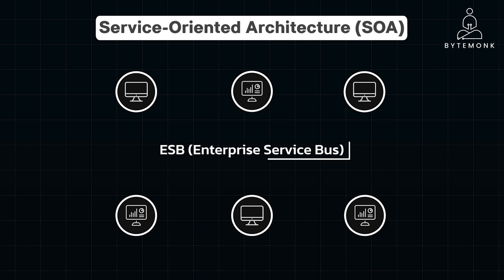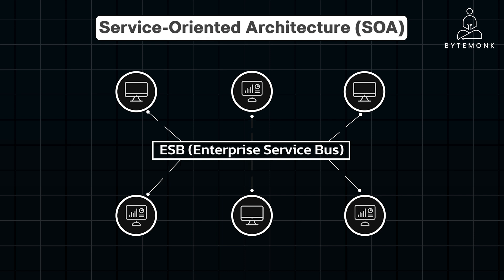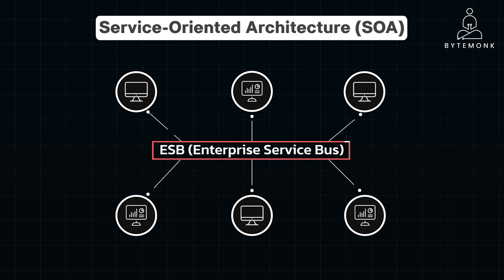However, SOA's distributed nature introduced complexities. In many SOA applications, the ESB, or Enterprise Service Bus, served as a central hub for message routing, transformation, and orchestration. The ESB itself became a complex piece of middleware, requiring specialized skills to configure and maintain. A failure in the ESB disrupted communication between services, potentially causing system-wide outages.